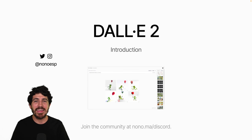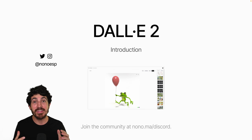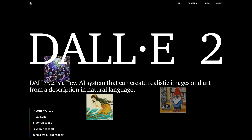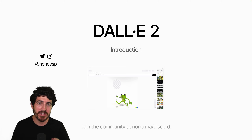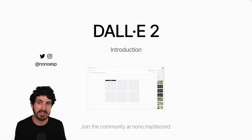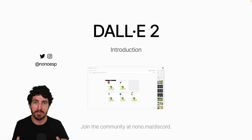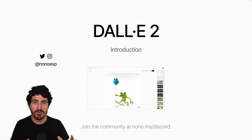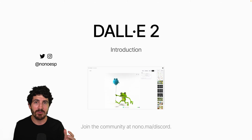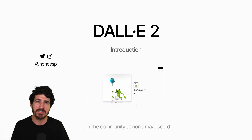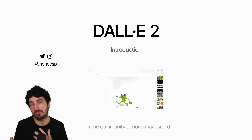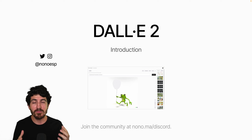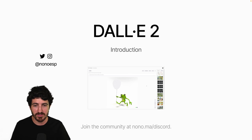Hi everyone, it's Nono here, and this is an overview on DALL-E 2. This is OpenAI's latest text-to-image generation system, which I've been lucky to get early access to in the past few weeks. I've been playing around with it, and today I'm going to give you some hints on what this system can do, how the web UI looks, and what you might be able to do with these tools regarding creativity, design, craft, or even making images and image compositions from your own images or from text prompts.